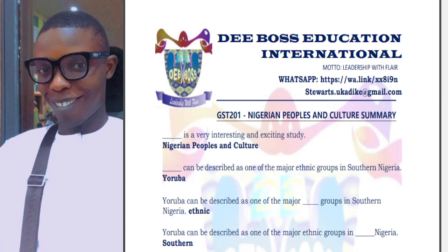Without further ado, I'm going to run through the initial part of the course material and summarize everything for you. The material started by talking about six major tribes. We have both on the northern and the southern parts of Nigeria. On the northern parts, you will see tribes like the Hausas, the Fulani, the Jukuns, the Kanuris, the Nukbis, and the Galas.